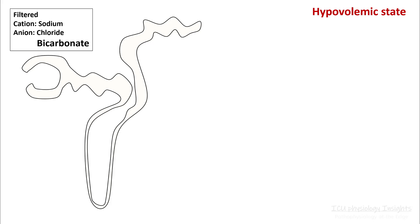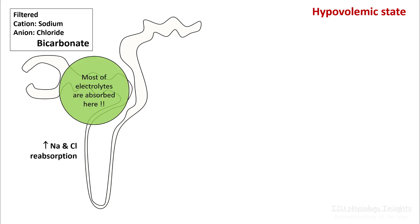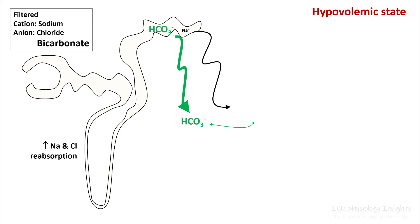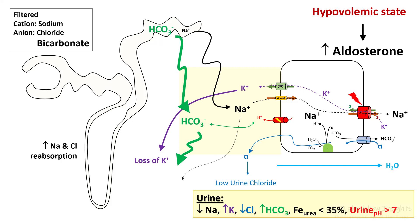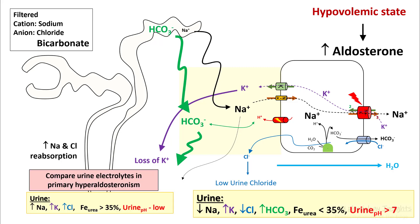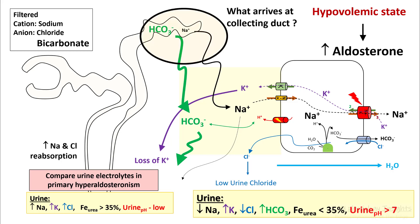Let's see how urine looks in a hypovolemic state. Sodium, chloride, and bicarb are easily filtered, and because of hypovolemia most of these would be reabsorbed in the proximal convoluted tubule. A small amount of sodium and quite a bit of bicarb reaches the collecting duct. Since the aldosterone pathway is stimulated, you would absorb some of the sodium in exchange for potassium and lose some chloride. Urine would appear deficient in sodium and chloride while it will have elevated potassium and bicarb. FEurea will be less than 35% and urine pH would be more than 7. Comparing urine electrolytes in primary hyperaldosteronism with hypovolemic state, the difference comes from what is really arriving at the collecting duct — in both cases aldosterone is absorbing sodium and losing potassium along with some hydrogen ion.